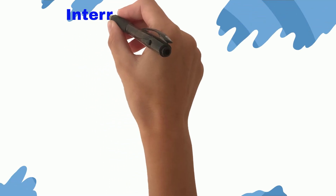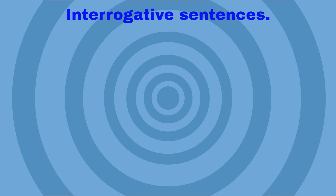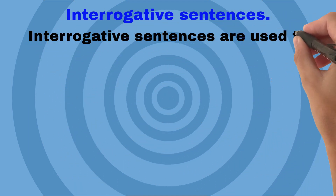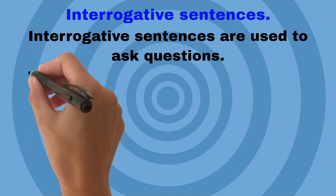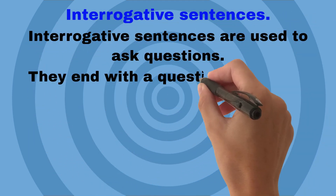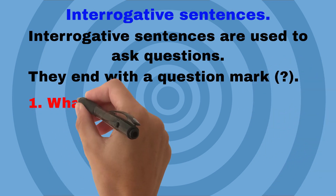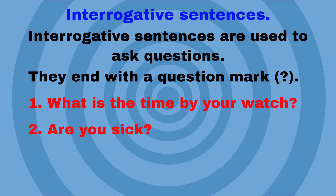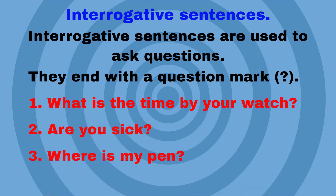Next is interrogative sentences. Interrogative sentences are used to ask questions. They end with a question mark. For example: 'What is the time by your watch?' 'Are you sick?' 'Where is my pen?'